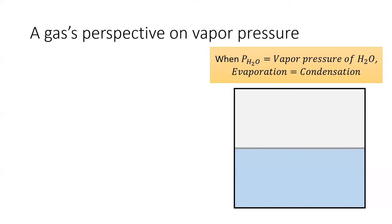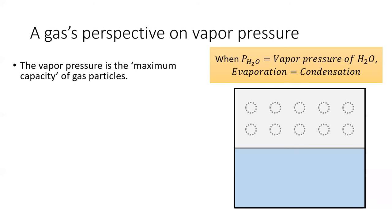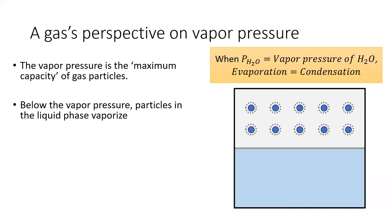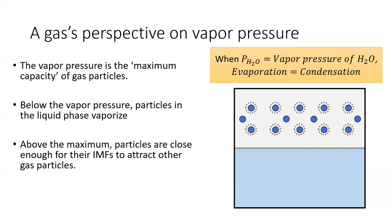From the gas's perspective, the vapor pressure is the maximum capacity of particles which can be in the gas phase. Below the vapor pressure, particles in the liquid phase will evaporate until the gas phase is at maximum capacity. If we continue to increase particles in the gas phase, we will be above the vapor pressure. These particles will be close enough together that their IMFs will attract them to each other, which will cause them to condense and enter the liquid phase.